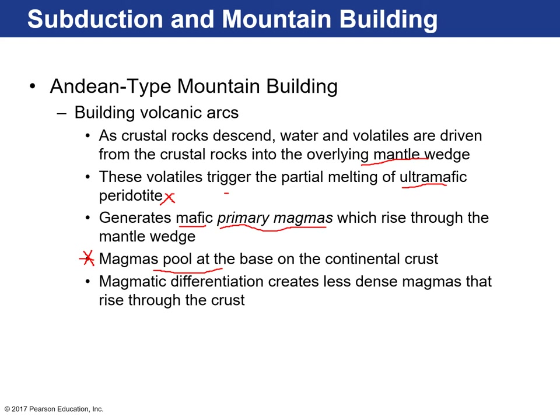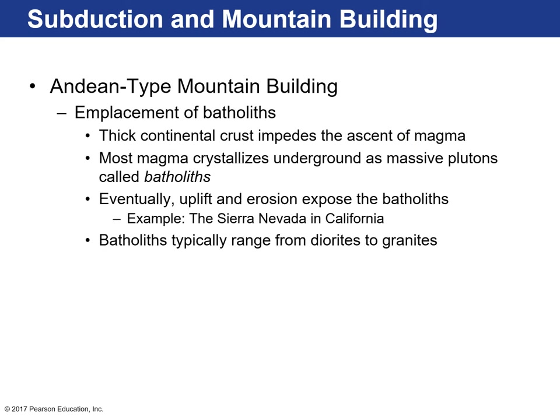They stagnate at the base of the continental crust, where magmatic differentiation occurs. The first-forming minerals crystallize and settle out of the magma, changing its composition. As a result, the magma becomes less dense and more buoyant, and starts to rise through the overlying continental crust. This leads to emplacement of these magmas in the continental crust, where most of the time they eventually become batholiths — unless there's an easier pathway to the surface, like faults. Most crystallize deep underground.